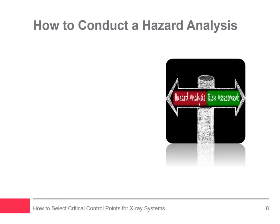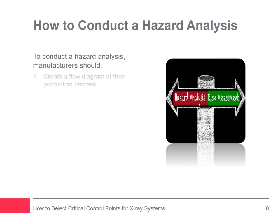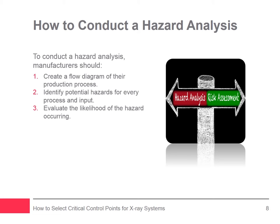Every manufacturer should perform a hazard analysis for every product they produce to assess the risk of foreign bodies being present. A food or pharmaceutical safety hazard is anything that could be a threat to human health. To conduct a hazard analysis, manufacturers should create a flow diagram of the production process including every single operation and input — ingredients and packaging materials that touch or affect the line. For every process and input, potential hazards must be identified, looking at the sources of hazards and whether manufacturing processes introduce, control, or increase the hazard. Manufacturers should then evaluate the likelihood of the hazard occurring, filtering out unlikely events to focus on risks with a reasonable chance of occurring.